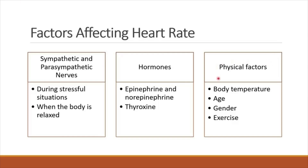Next are physical factors. For example, when having a fever, body temperature increases. An increase in body temperature by 1 degree Celsius raises the heart rate by 10 beats per minute. The second physical factor is age. Older people have a slower heart rate than younger people because of slower electrical activity in the SA node.